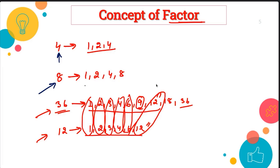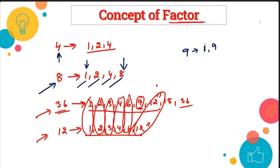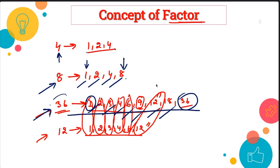Similarly, factors of eight: one, two, four, and eight. One is always common — one is going to divide any number, so one will always be a factor of any number, and the number itself is also always a factor. If I ask you what is the factor of nine, you can say one and nine — these two are always there. Now look at 36 — one and 36 are there, and apart from that 36 is also divisible by two, three, four, six, nine, 12, 18. All these numbers are factors of 36.